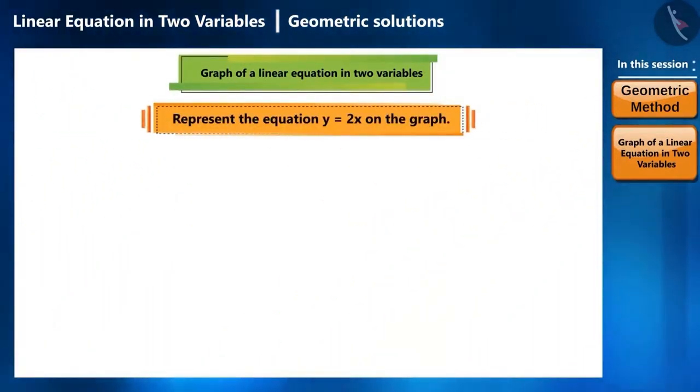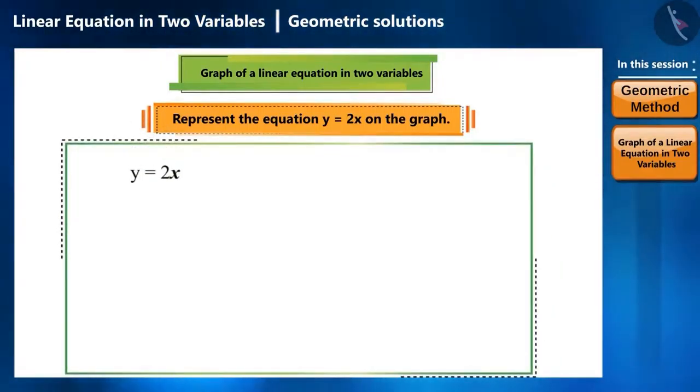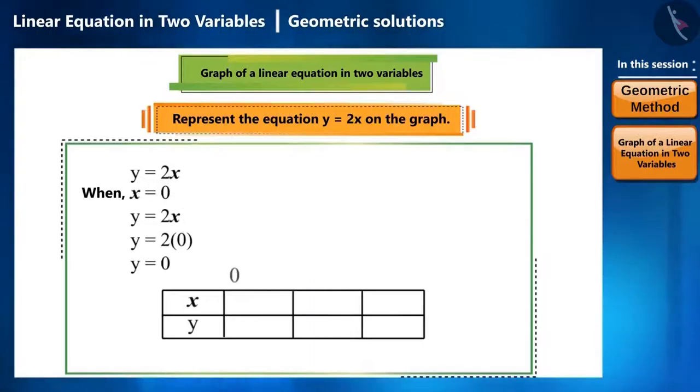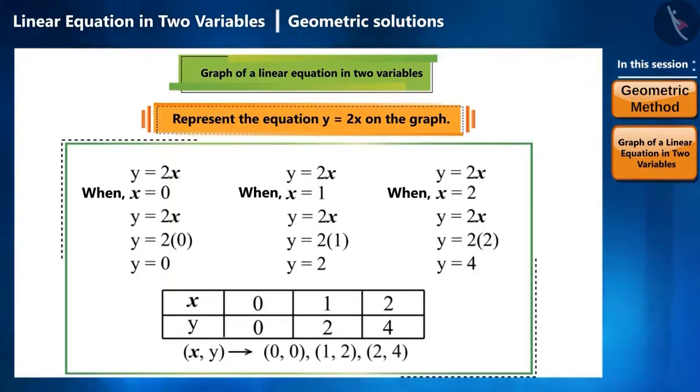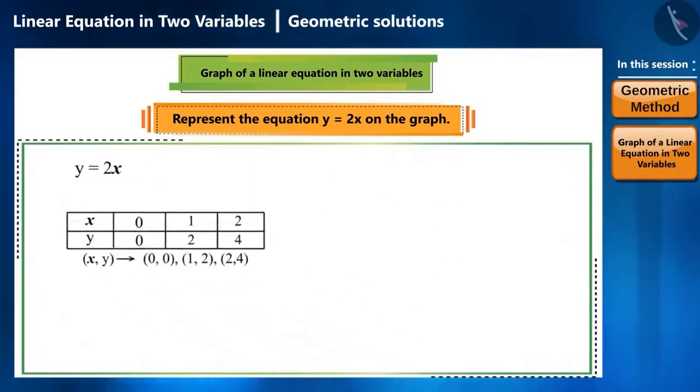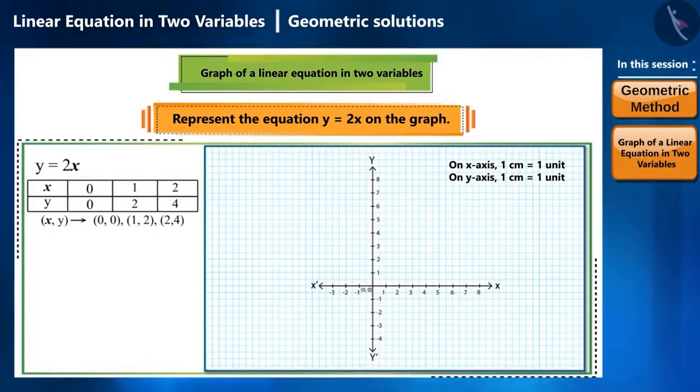Let's see another example. Represent the given equation on the graph y is equal to 2x. First let's find the coordinate points. We got the points 0,0, 1,2 and 2,4. Let's represent them now on a graph. First, we will draw the x and y axis and mark the correct units. Now we will plot the points and draw a line connecting these points.